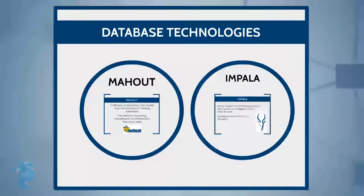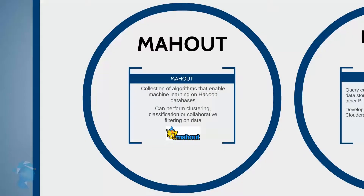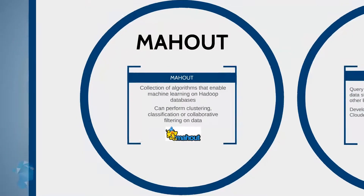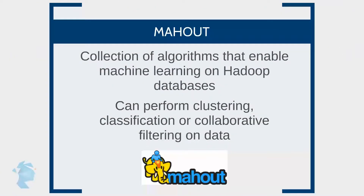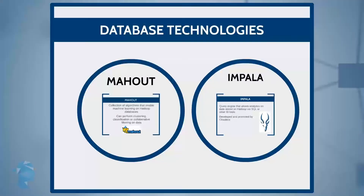Big data specialists also require specialized technologies to perform analytics. Mahout is a collection of algorithms that enables machine learning to be performed on Hadoop databases. If you are looking to perform clustering, classification, or collaborative filtering on your data, Mahout will help you do that. E-commerce companies and retailers frequently need to perform tasks like clustering and collaborative filtering, making Mahout a great choice for them.